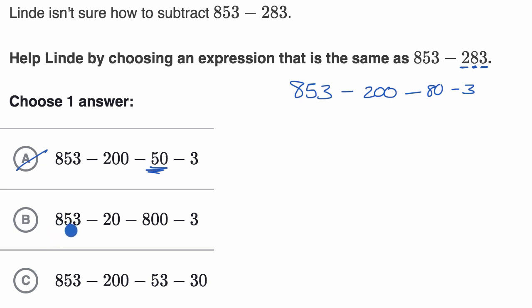Here we have 853 minus 20 minus 800 minus 3. Well, this is a little bit strange because we don't have two tens, we have two hundreds. And we don't have eight hundreds, we have eight tens. So this is also incorrect.